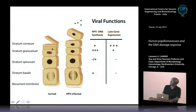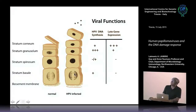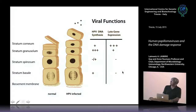HPVs enter into the cells in the basal layer through microwounds. They travel down the microwound, attach to the cell surface, migrate to the nucleus, and establish their genomes as episomal copies—extra-chromosomal elements at about 100 copies per cell. When this cell divides, the viral DNA is replicated coordinately with cellular replication and distributed equally between the two daughter cells, so the viral DNA is maintained in the basal layer as well as in the cell pushed upwards.